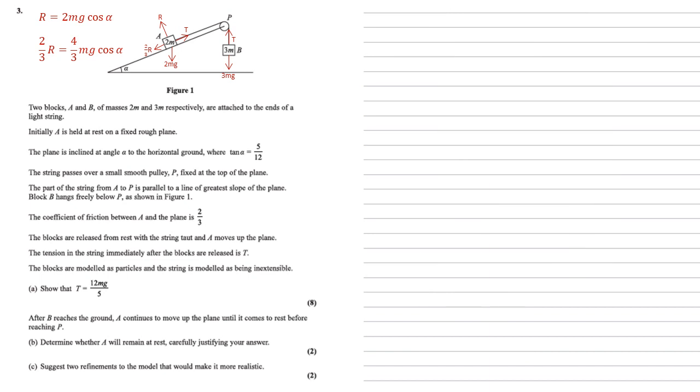For part C, we need to suggest two refinements to the model that would make it more realistic. There are many answers we can give for this. I went with a couple of the more simple ones. So use an extensible string instead of an inextensible string. And use the weight of the string. So we were modelling with a light string. So if we put some mass into this, that would change it round. Other possible answers, we could put some friction at the pulley. We could include air resistance. We could model the blocks with their dimensions rather than modelling them as particles. These would all change it and make it more realistic.